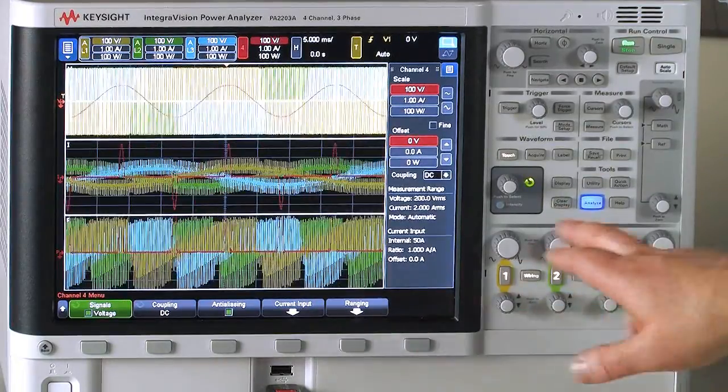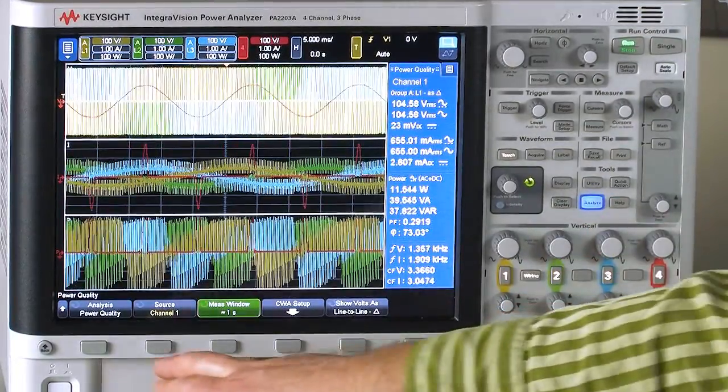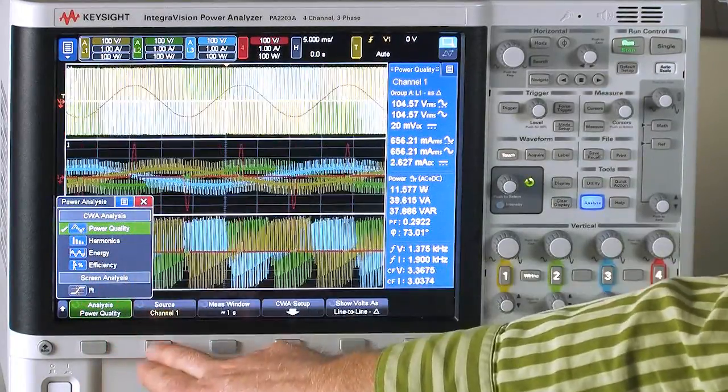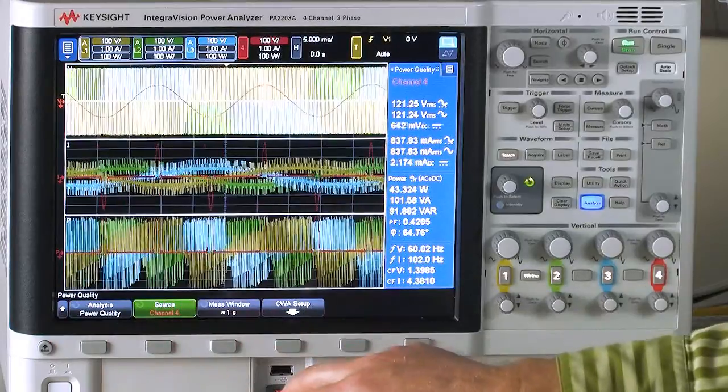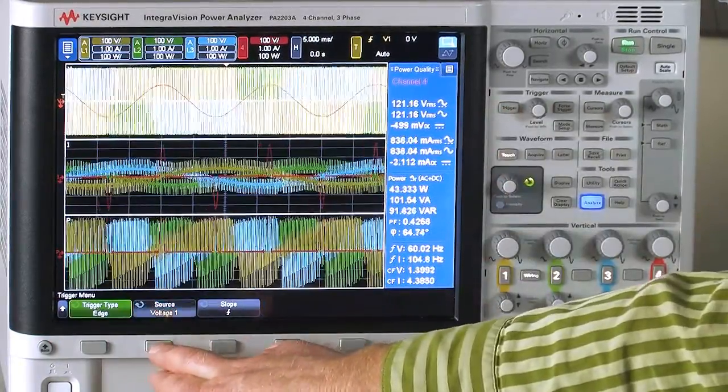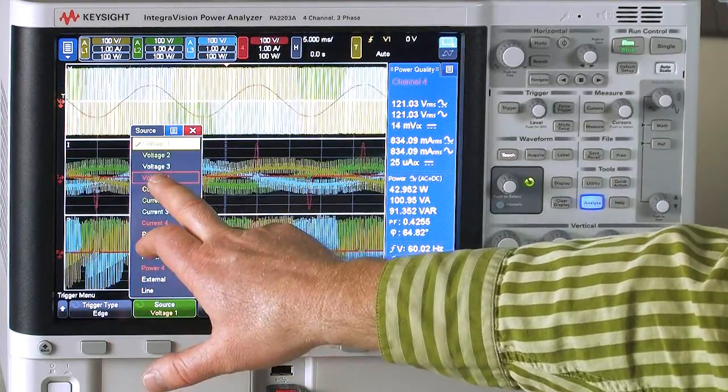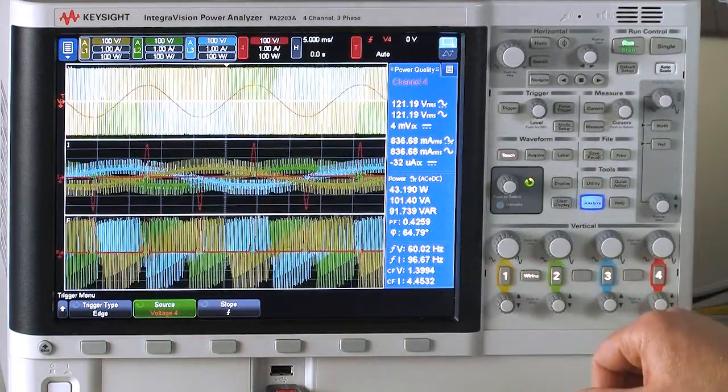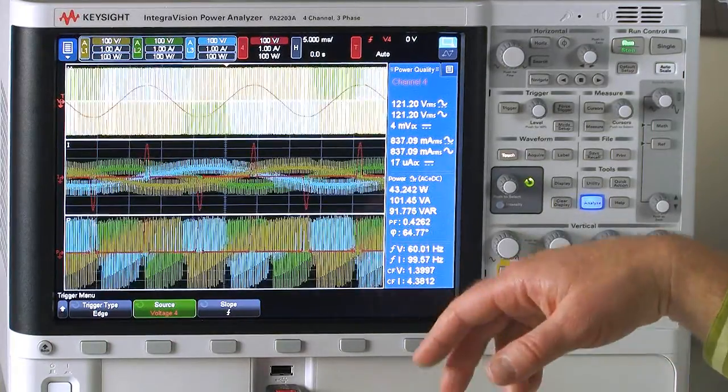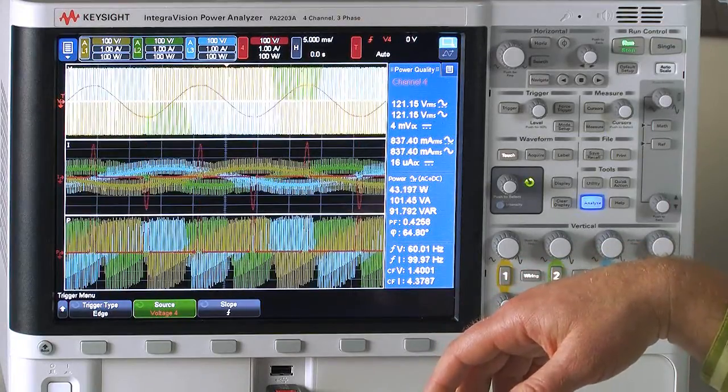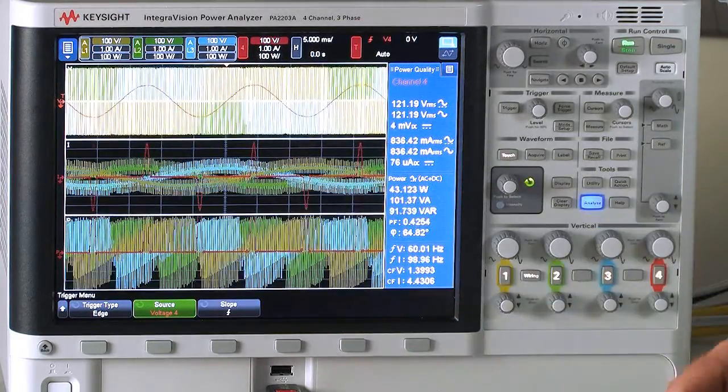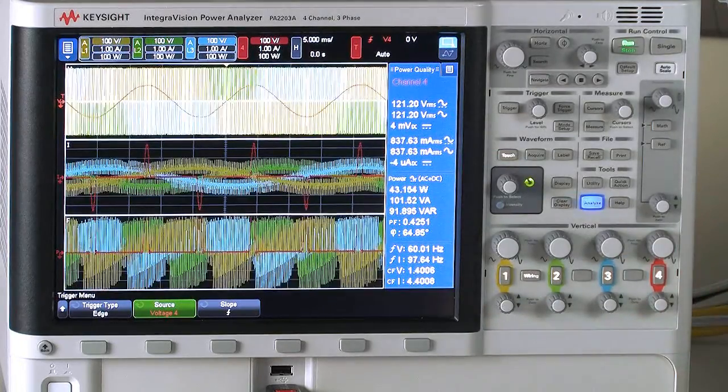And we can actually look at the power quality measurement on that channel and look at what its power factor looks like. I can change my trigger source to channel four. So now you can see the power factor is actually quite poor at 0.4. The angle doesn't really mean anything because it's not a sine wave. It's really a very nonlinear response.